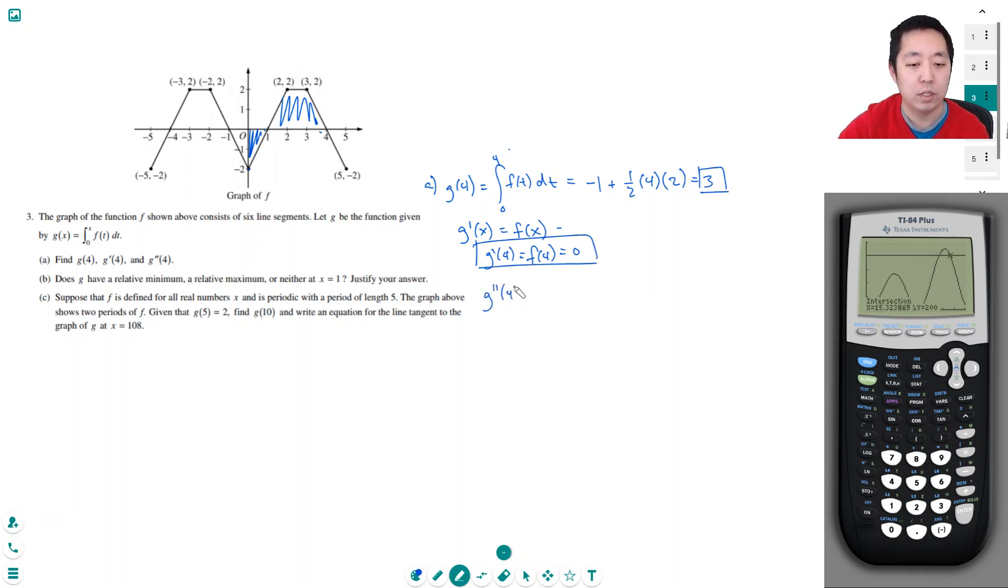And finally, g double prime of 4 is equal to, well it's just the derivative of this one, it's the derivative at 4. And the slope here is just the slope of this line. I drop down 4, I go over 2, so it's negative 2. That's what the slope of that line is.